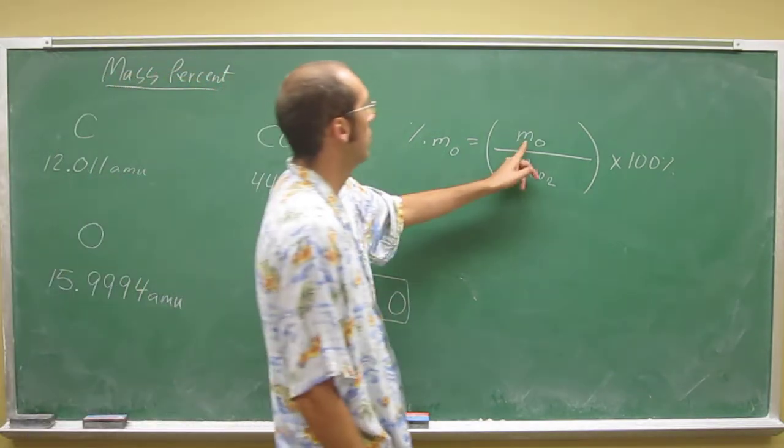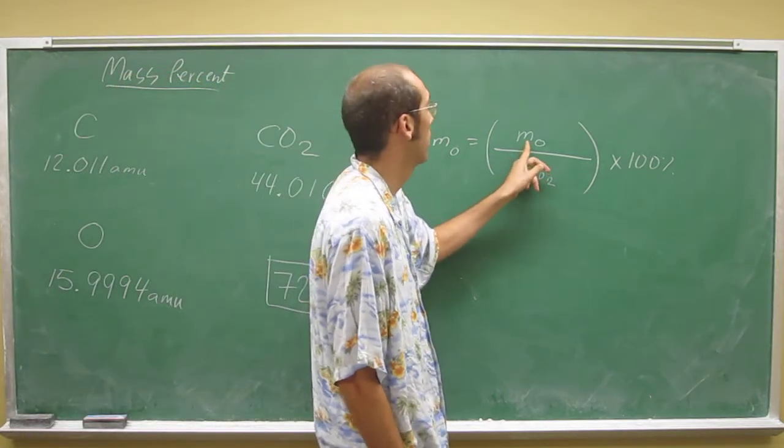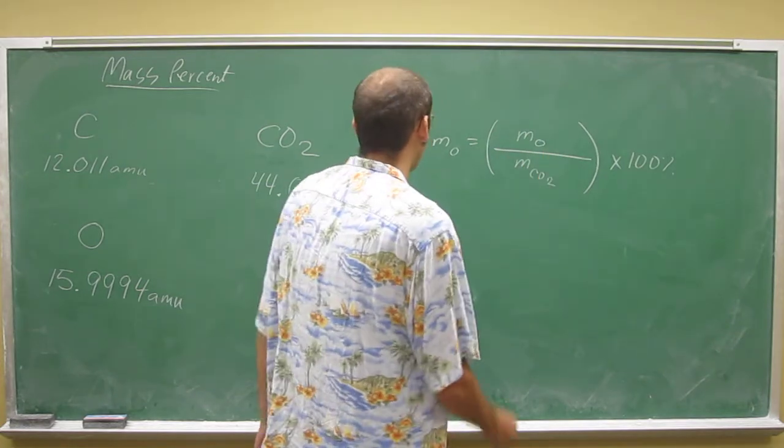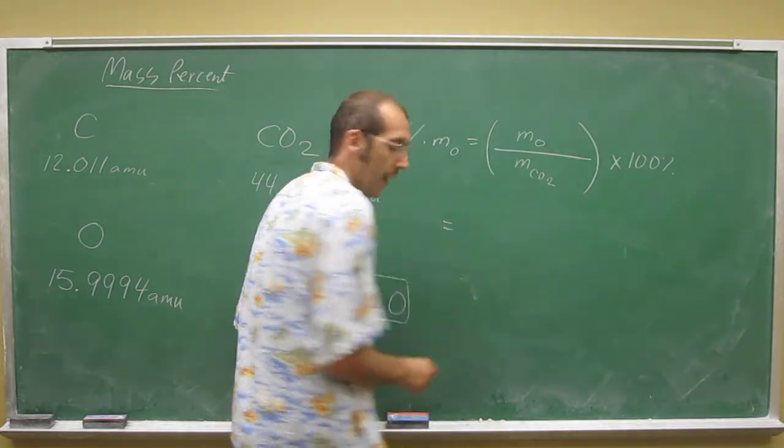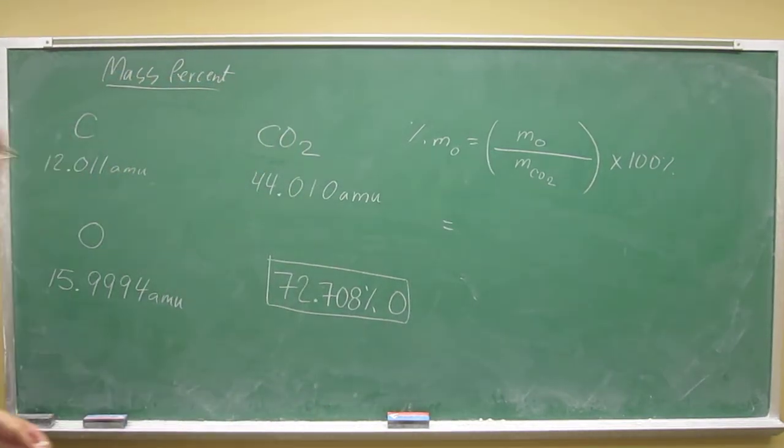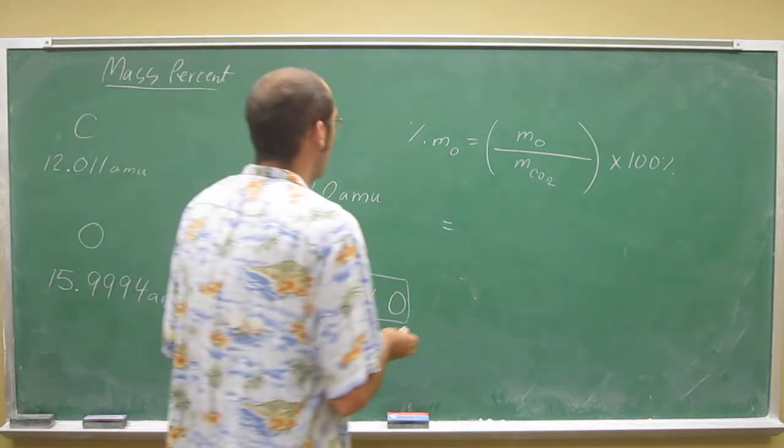So you don't just want to put the mass of one oxygen here, this is the mass of all the oxygen in carbon dioxide. So in order to do that, we're going to have to take 15.9994, multiply it by 2. Why? Because there's two of them.